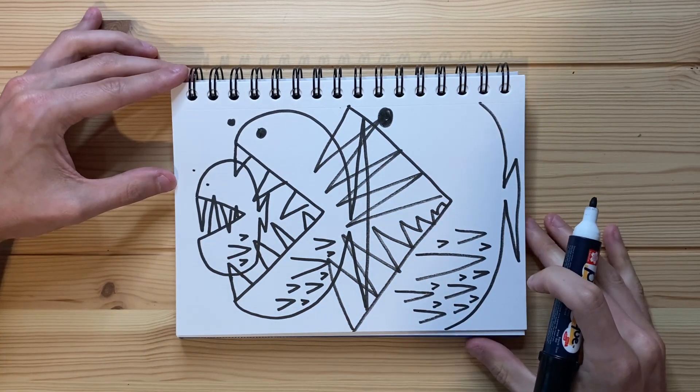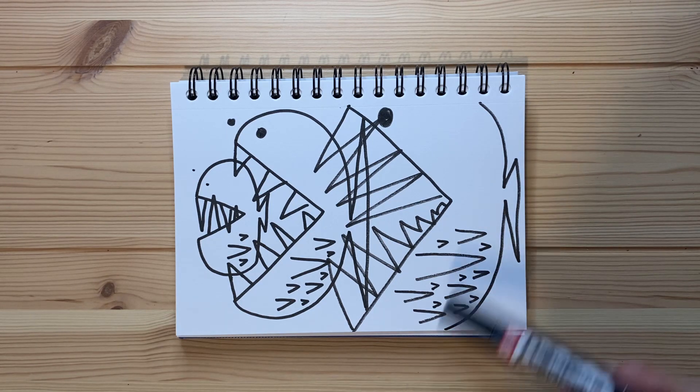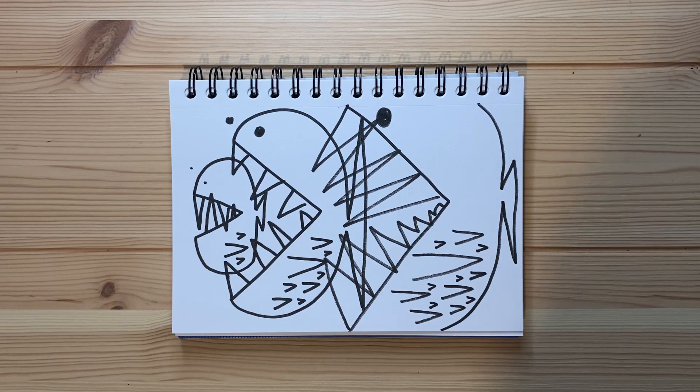Well, I will admit, I definitely do think that a slightly bigger piece of paper would have done me a little bit better. But overall, I'm pretty happy with this. It is quite literally a fish eating a fish eating a fish. And that is exactly what I set out to draw, and that is what I have.